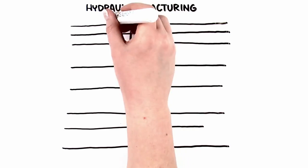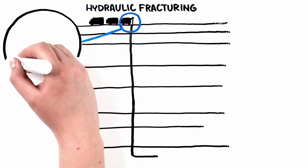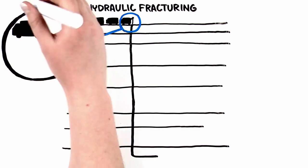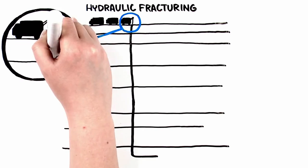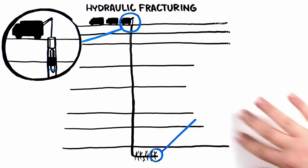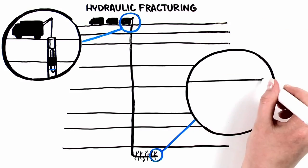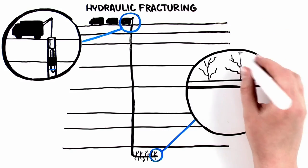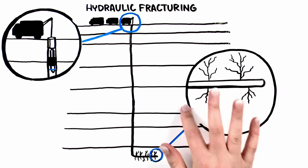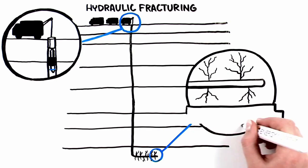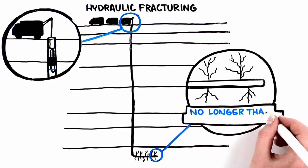To start, a series of small charges are set off along a portion of the lateral part of the wellbore, creating small fissures in the shale. Then a fluid mixture is pumped down into the formation at pressure to open up additional cracks or fractures in the shale. These are thin hairline fissures that are typically no longer than a few hundred feet.